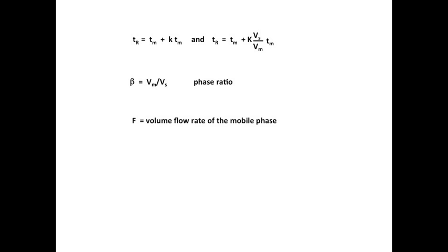The volume flow rate, F, of the mobile phase may have the units milliliters per minute. The product of F and the retention time gives you the volume required to elute a solute, also called the retention volume for the solute.